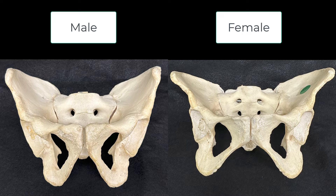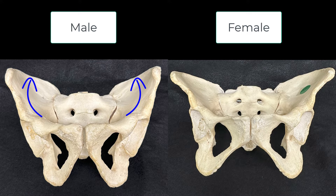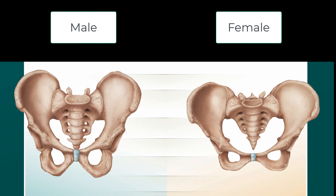Male pelvises are typically larger with rougher projections. Perhaps the most apparent difference is the pubic angle — the male pubic angle is typically acute, or less than 90 degrees, while the female pubic angle is obtuse, 100 degrees or more. The iliac fossa is generally deeper and more vertical in males, while shallower and more flared in females. The male pelvic inlet is narrower and heart-shaped, while the female's is proportionally wider and more circular.